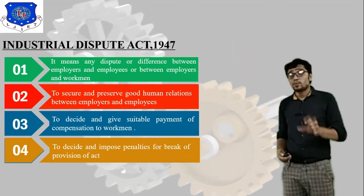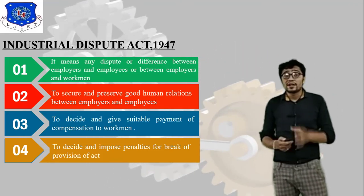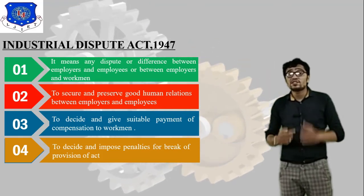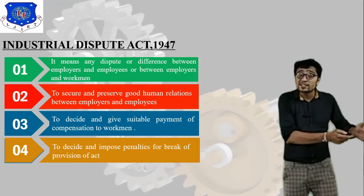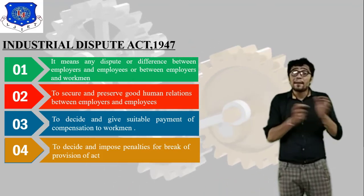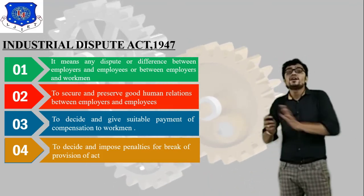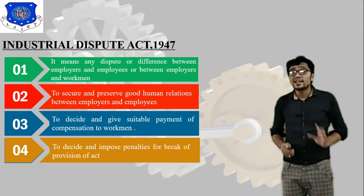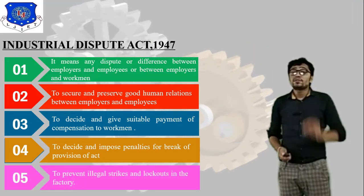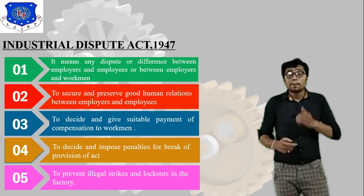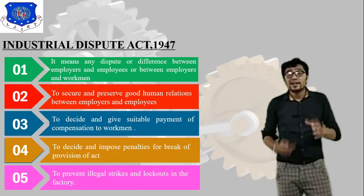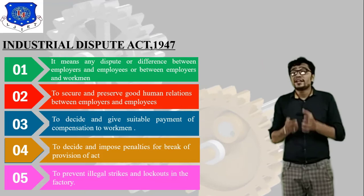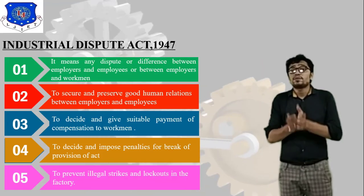Basically, Industrial Dispute is a relationship dispute or difference between employers and employees, or between employers and workmen. The fifth objective is to prevent illegal strikes and lockouts in the factory. This is what the Industrial Dispute Act covers.